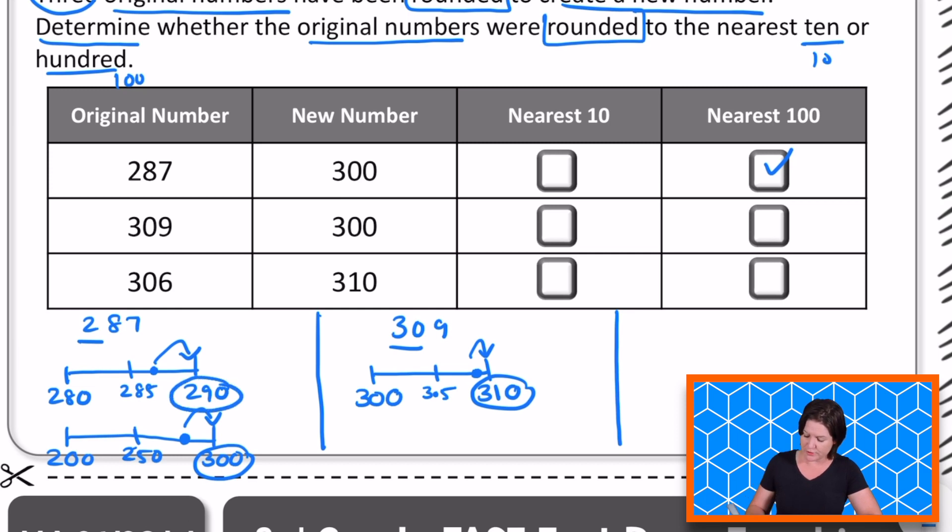So 310 is what would be the answer if we were rounding to the nearest 10. But the new number that's been created is 300. So again, it must be to the nearest hundreds place that this number was rounded to. But let's make sure 309 has 300s, which means we've got 300 on this side and the next 100 would be 400. Halfway would be 350. And 309 is way over here, which means that because it's before that halfway point, we're rounding down to 300. So we will go ahead and check to the nearest 100 again.